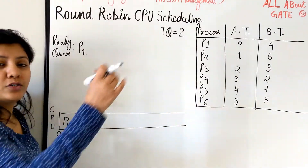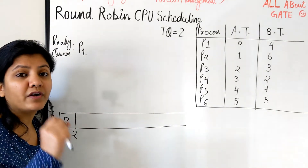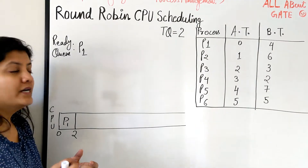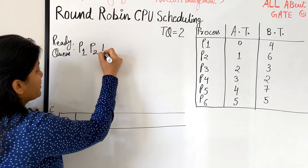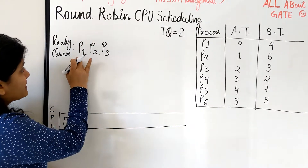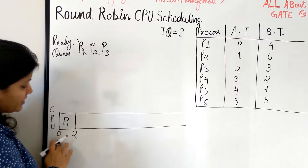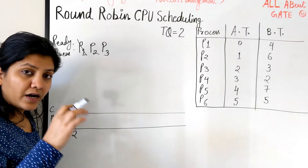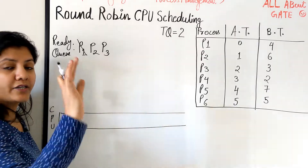We update the ready queue — this is the most important and critical part of Round Robin scheduling. You have to be vigilant all the time and check whether new processes are coming in. P2 comes into the ready queue, and P3 also comes into the ready queue. When we started, there was only one process scheduled. By the time P1 finished its first quantum, we had two more processes in the ready queue.